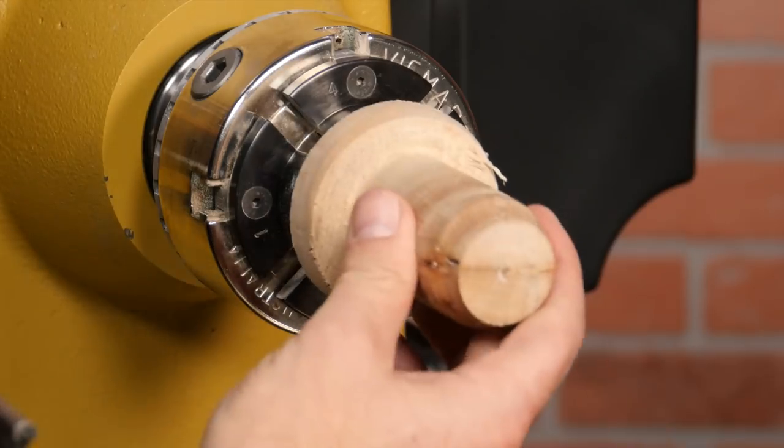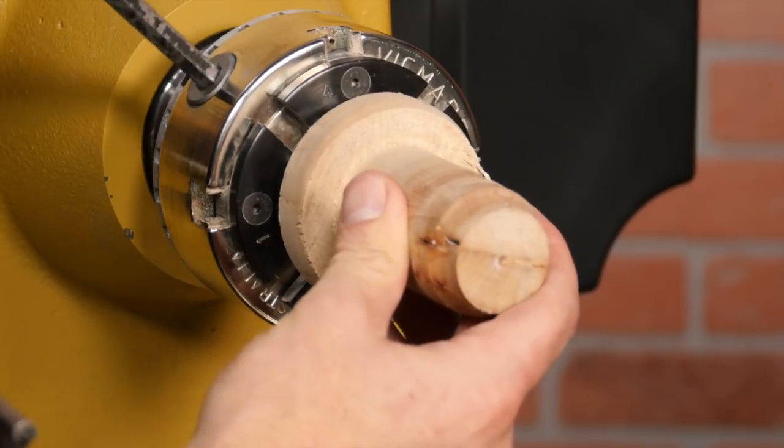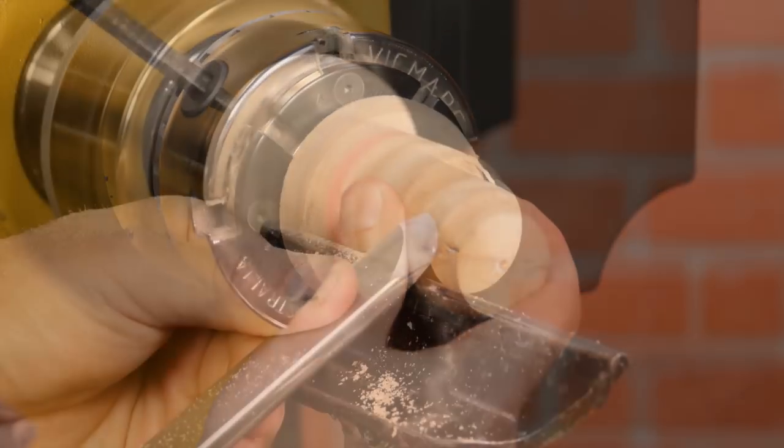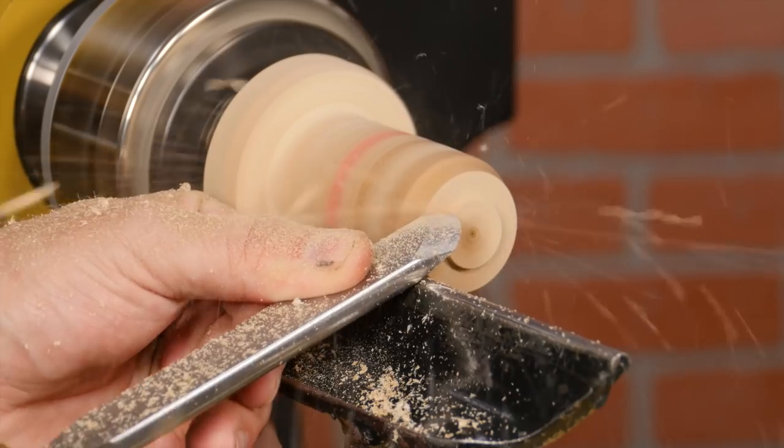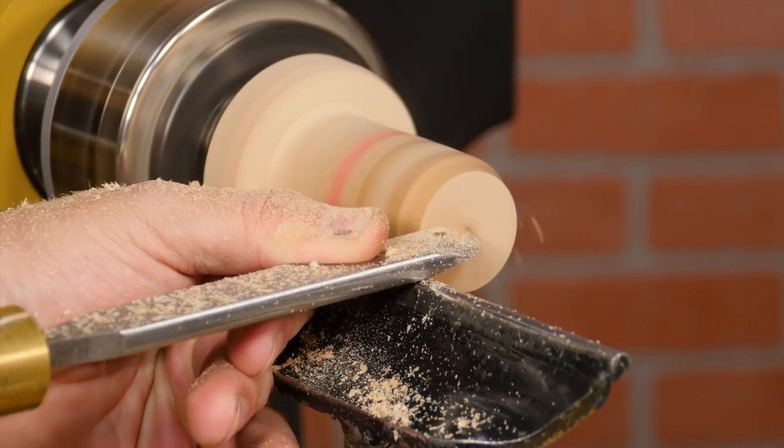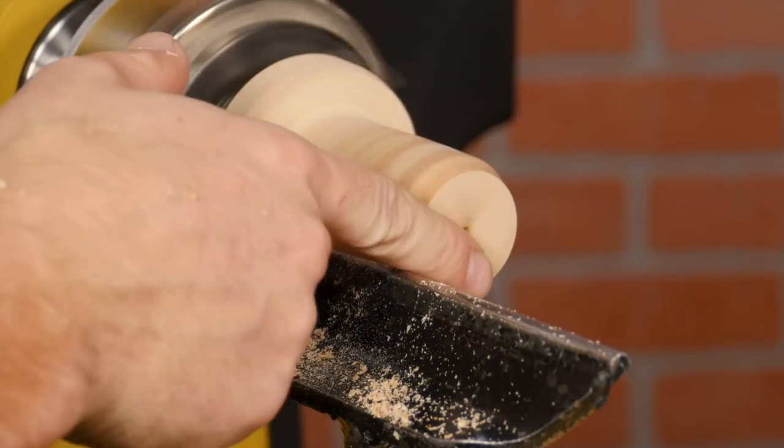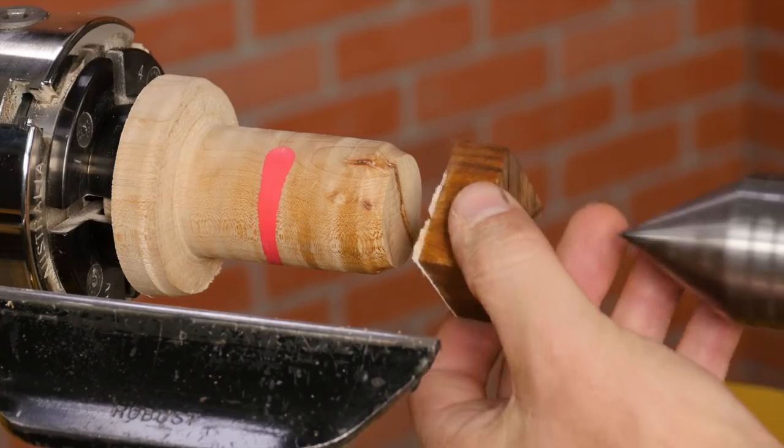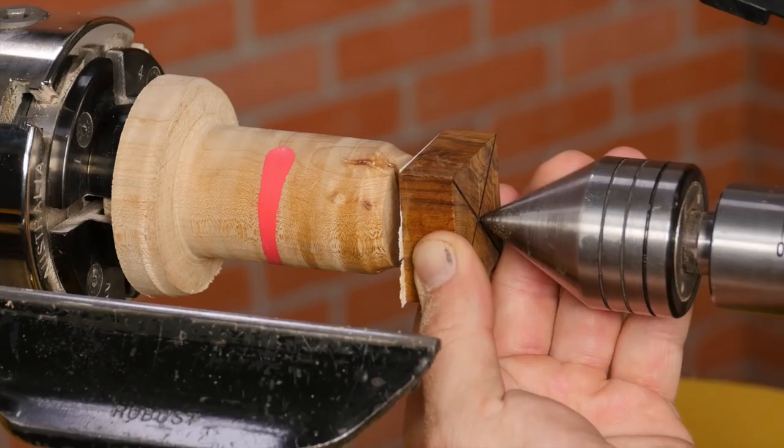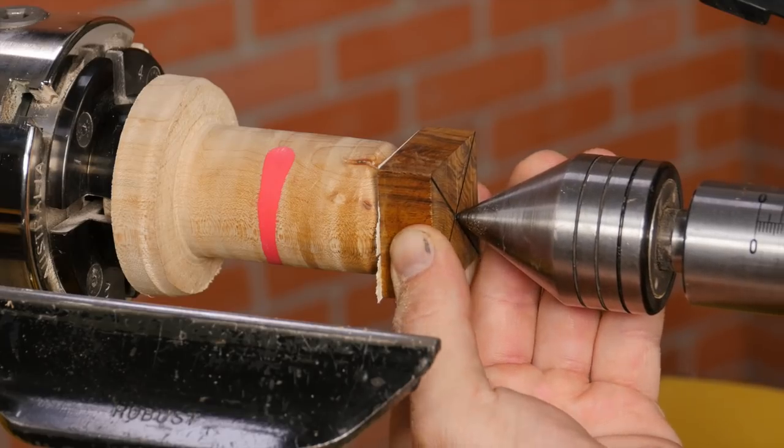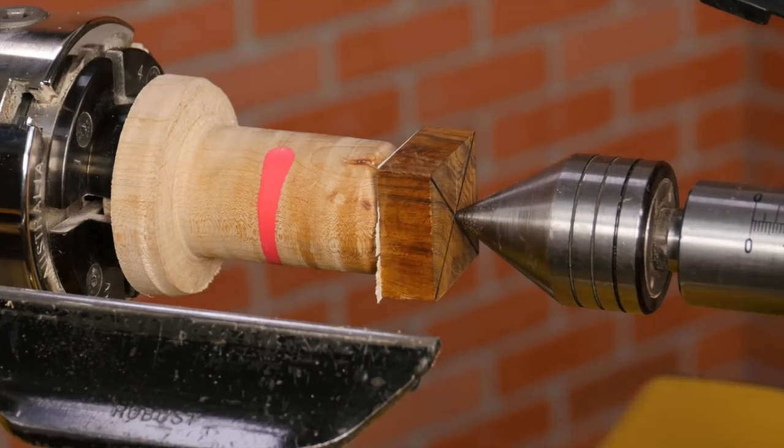At the lathe mount a waste block then true up the face using a skew. This will be our jig for drilling and rough turning the blank. Use a cone center to line up the center of the blank to the waste block. Apply firm pressure so the tape adheres to the waste block completely.